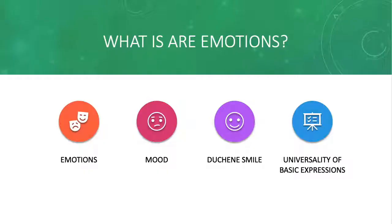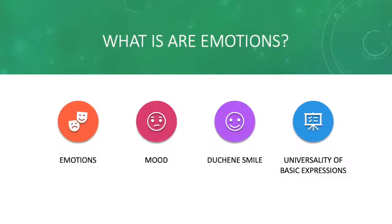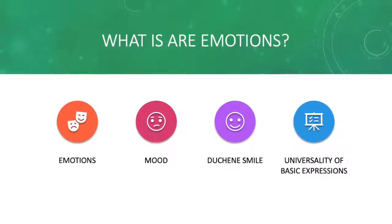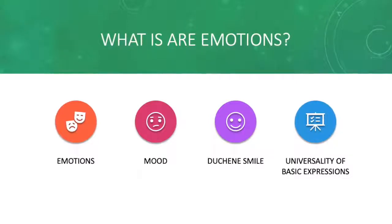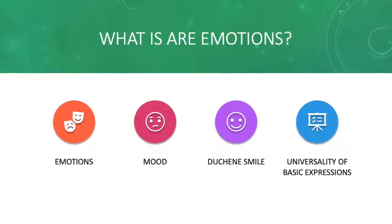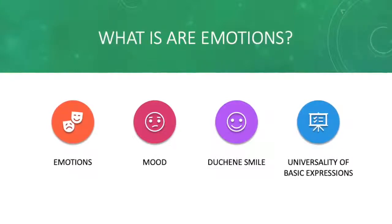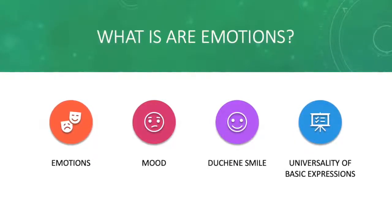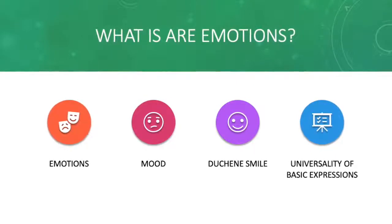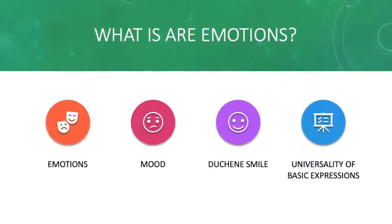Firstly, what are emotions? Emotions are brief, specific, psychophysiological responses that drive goals which need to be met, and they are usually social goals. Mood is more enduring than emotions and has less specific causes. The Duchenne smile was discovered by Ekman, and it is a genuine smile in which the crow's feet by the eyes can be seen.